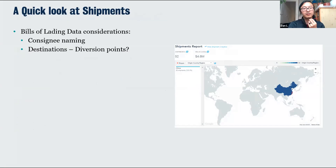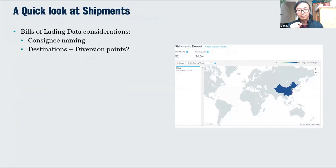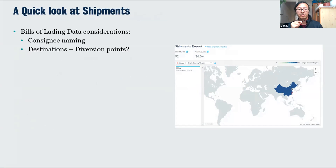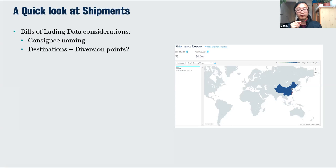Bills of lading, for those unfamiliar, are pieces of declaration that a consignee must submit when shipping something — declaring who they are, where they're sending it, who will receive it, the address, what's inside, and so on. Sometimes that's commercially or publicly available and we can get that specific technical level of data about who sent what where.